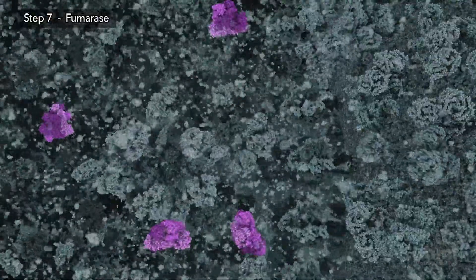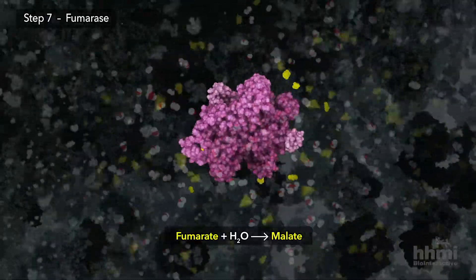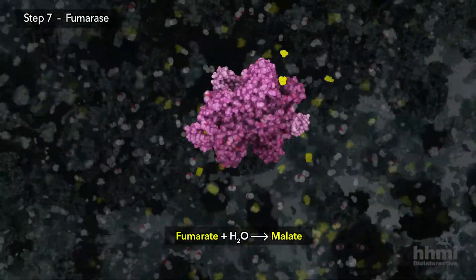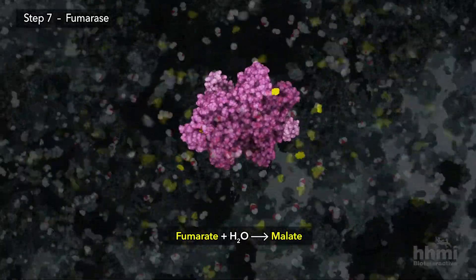Step seven takes fumarate, generated by step six, and reacts it with water to create four-carbon malate.